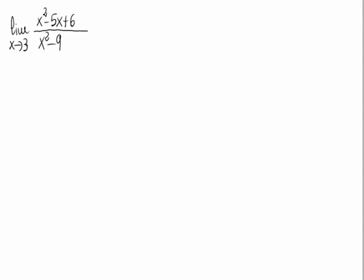Let's calculate the limit when x tends to 3 of x squared minus 5x plus 6 over x squared minus 9. To calculate the limit of a function, the first thing you do if the function is continuous — in this case the function is the quotient of two polynomials — you simply replace the x value.